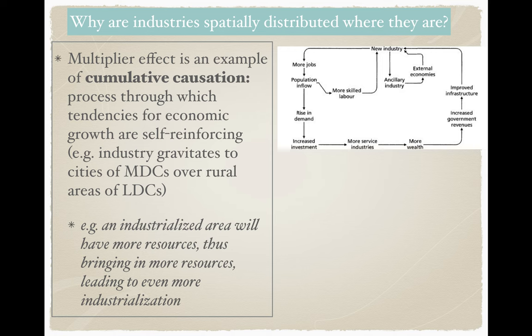This is something we're going to come back to when we talk about urbanization. The multiplier effect — the idea that this business will be successful, and then that business comes, which leads to that business — is also an example of what's called cumulative causation. Cumulative causation means the process through which tendencies for economic growth, things that make an economy successful, are self-reinforcing.